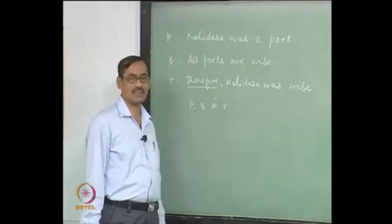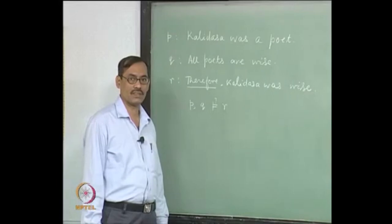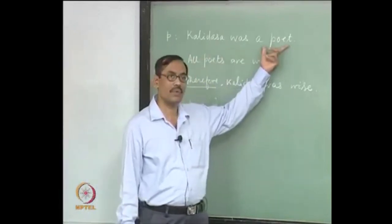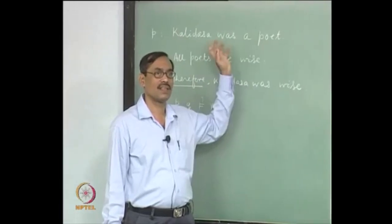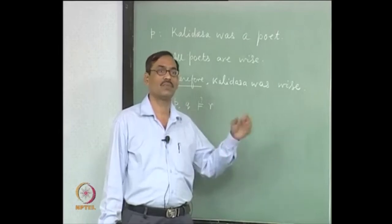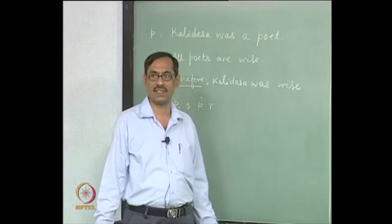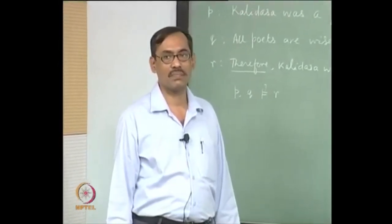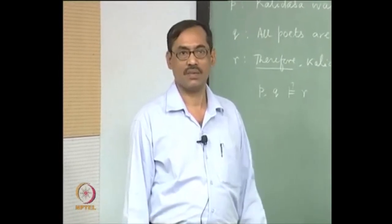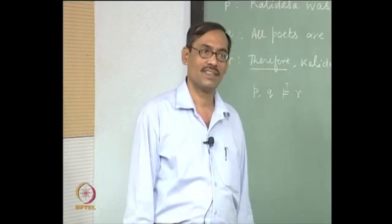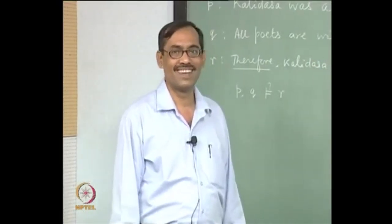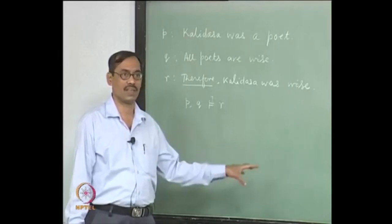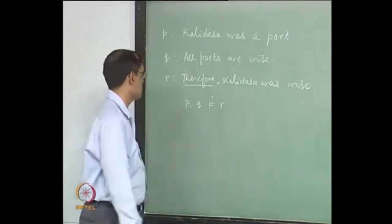Let us take the first sentence: 'Kalidasa was a poet.' There can be other poets — Omar Khayyam was a poet. Being a poet is a property. The sentence asserts that being a poet is correctly applied to Kalidasa. So 'is a poet' becomes a predicate — a property or a relation. That property holds for Kalidasa, may hold for Omar Khayyam, and may not hold for Arindam Chakrabarti. A predicate can assert truth or falsity about some objects. So we should have predicates.